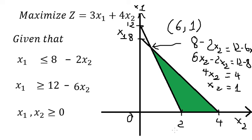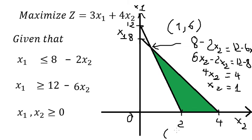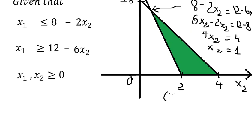So the intersection point is S2 equals 1 and S1 equals 6, which I plot here. The other corner points are: (S2=2, S1=0) plotted here, and (S2=0, S1=4) plotted here.